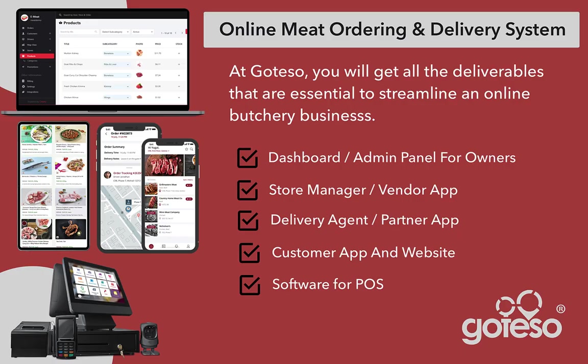Hi, welcome to our channel. My name is Ally, working as a product representative at Gattuso. As we know, an online meat ordering and delivery system has five deliverables: admin panel or dashboard, store manager or vendor app, delivery agent or partner app, customer app, and software for POS.